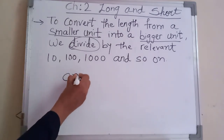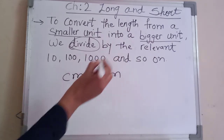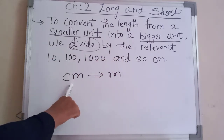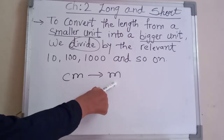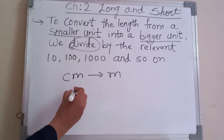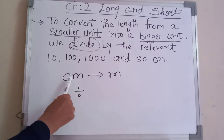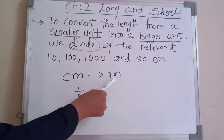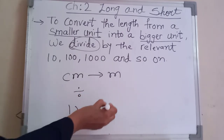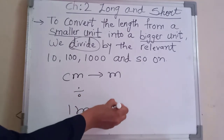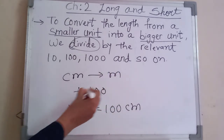Suppose the smaller unit is centimeter and we want to convert into meter. The question is in centimeter and we want the answer in meter — that means smaller unit to bigger unit — so we have to do division. Since one meter equals one hundred centimeter, we divide by hundred.